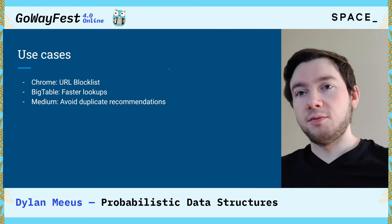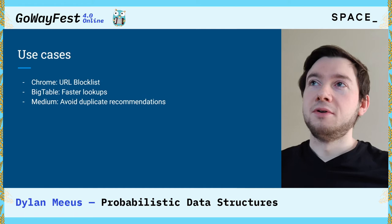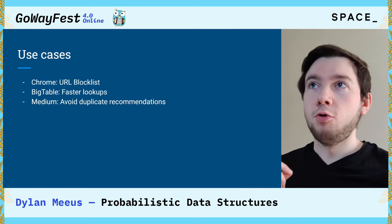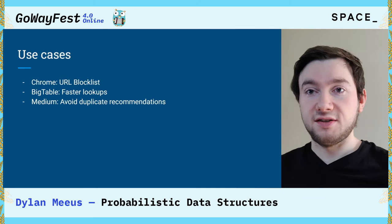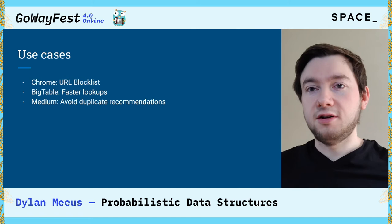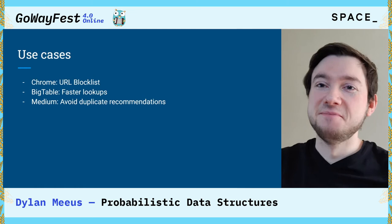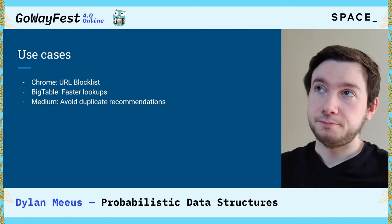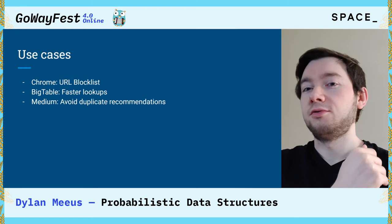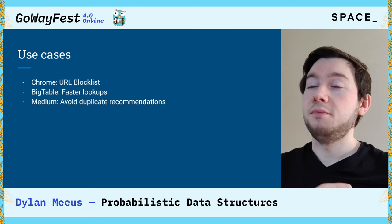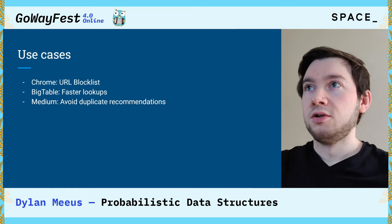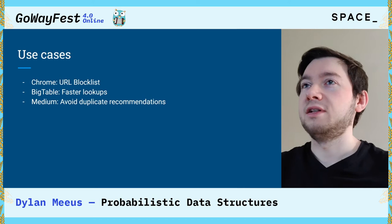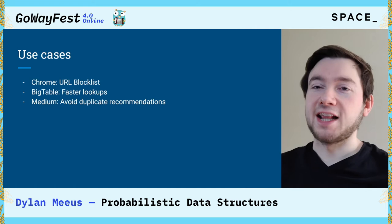Let's talk about some use cases. Bloom filters are actually used quite a bit. For example, in Chrome, if you navigate to a certain URL, Chrome will check your URL against a block list to make sure it's not malicious — and this needs to happen quickly so the user doesn't have to wait. Another use is Bigtable lookups, where a bloom filter can be used to eliminate useless searches so you don't look for something that's definitely absent. And in Medium, it can be used to avoid duplicate recommendations for articles. These probabilistic data structures are definitely used in the wild, and you're interacting with them without even realizing it.